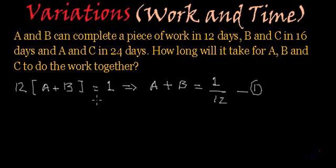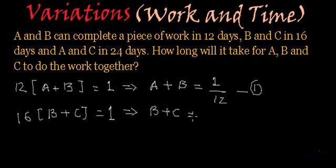Similarly, B and C finish the job in 16 days. That means 16 multiplied by B plus C is equal to 1. And from here we will get B plus C is equal to 1 by 16. Right? And this we are going to name as equation number 2.